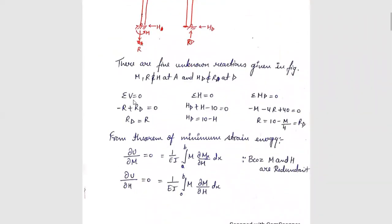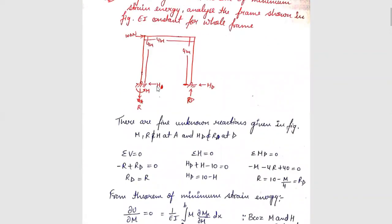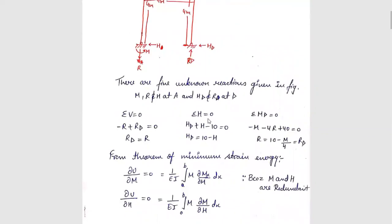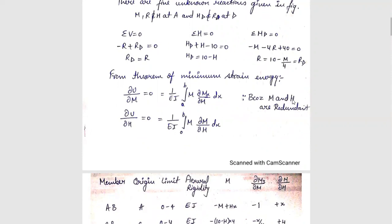What do we do? Sigma V equals zero, that is minus R plus R_D equals zero. For the theorem of minimum strain energy, we have two redundant reactions: M and H. First we will differentiate with respect to M, second we will differentiate with respect to H.